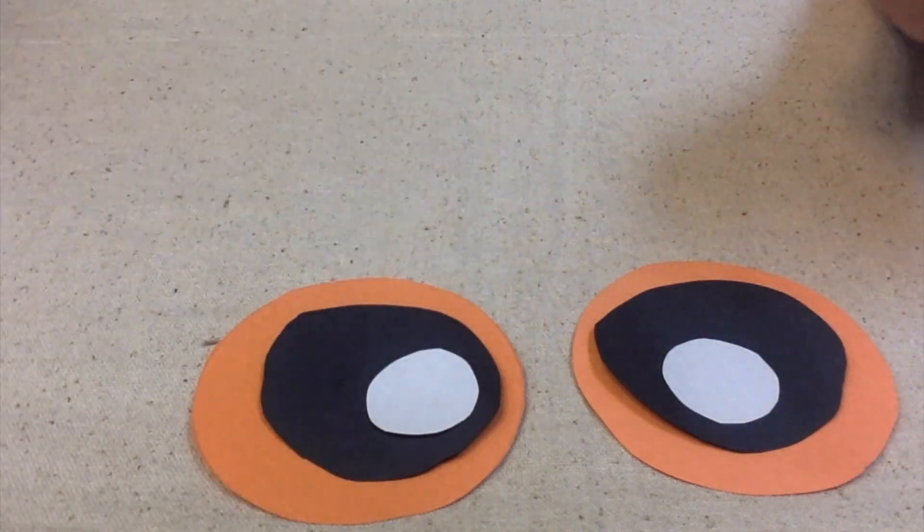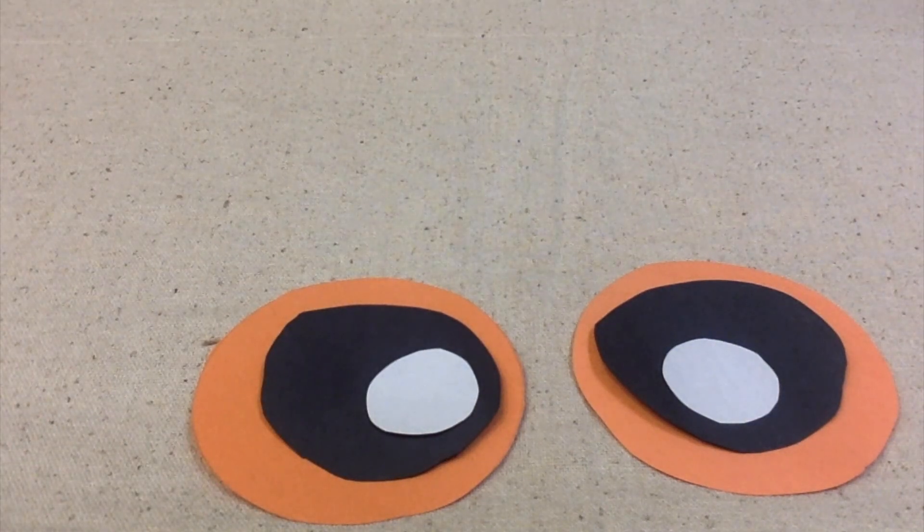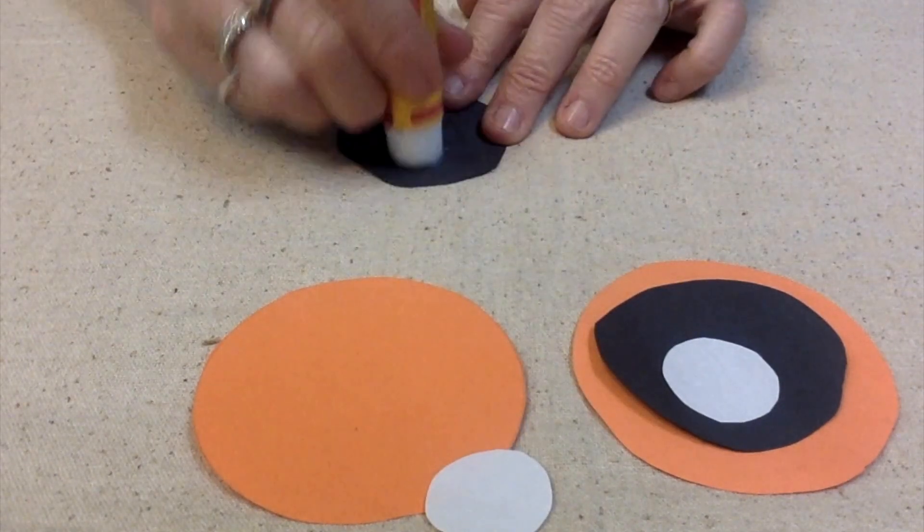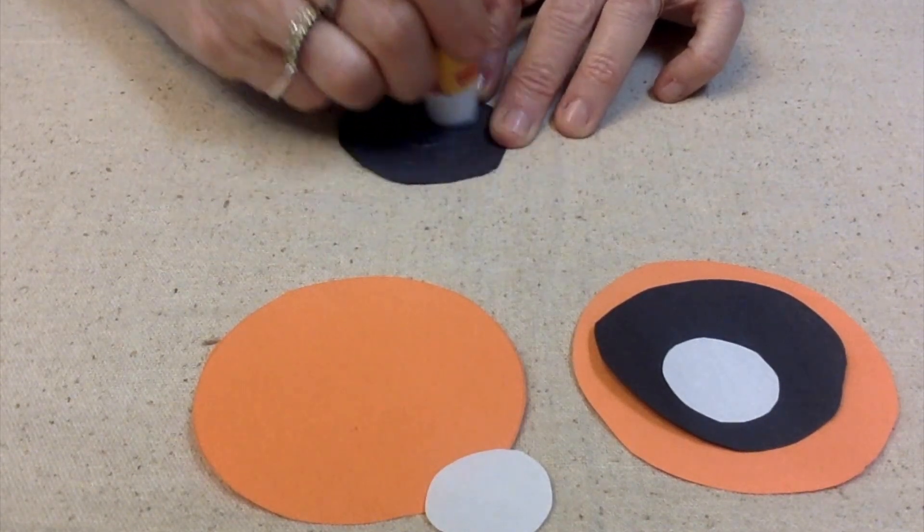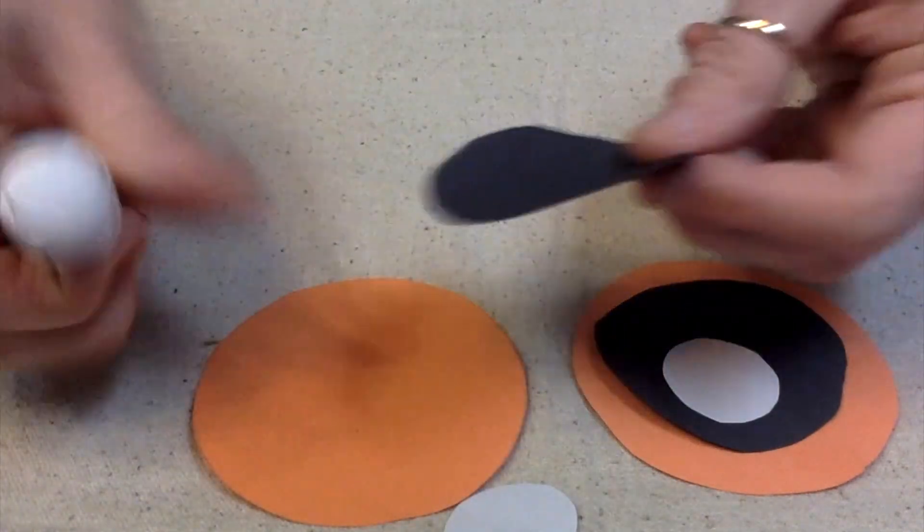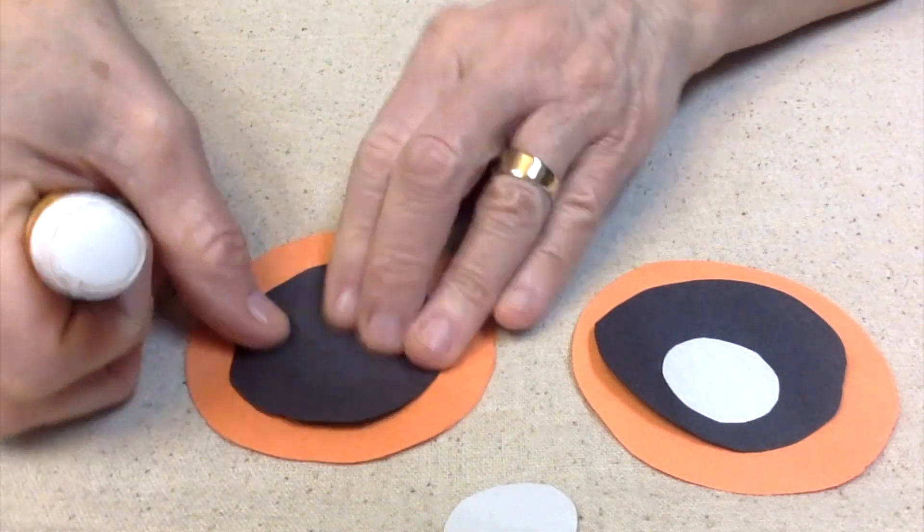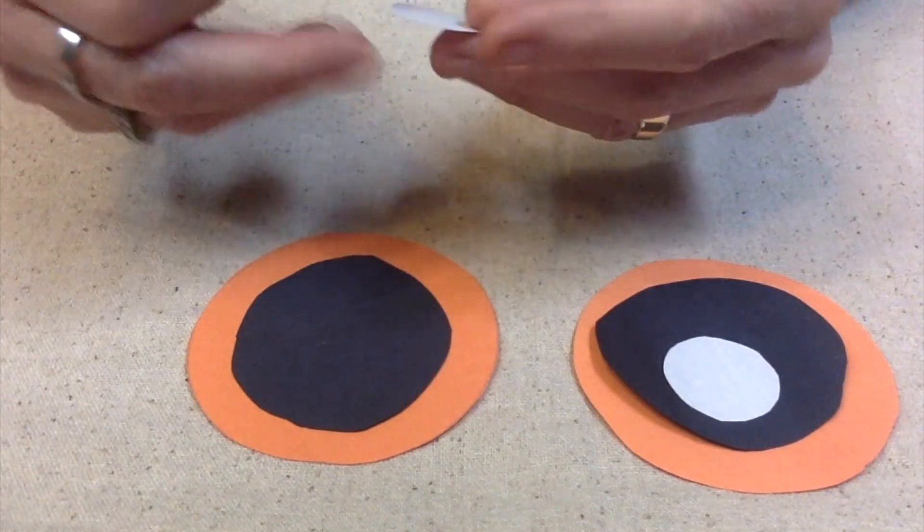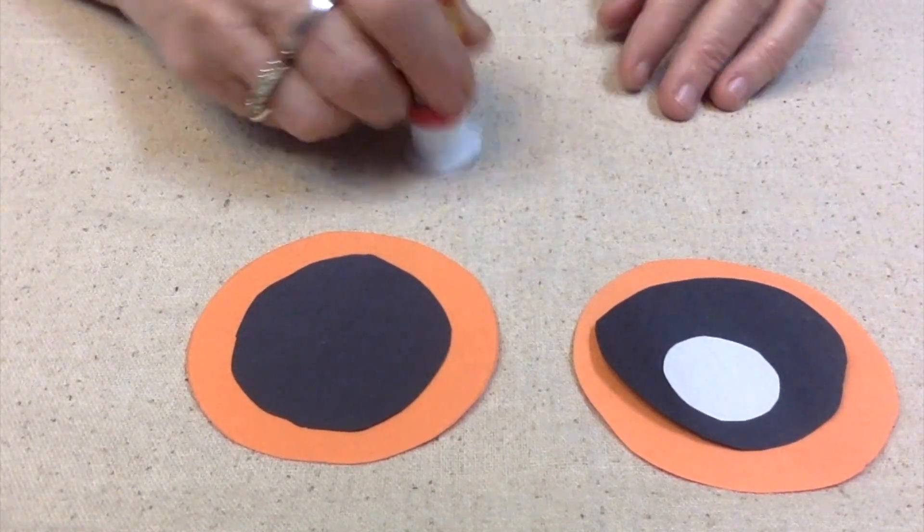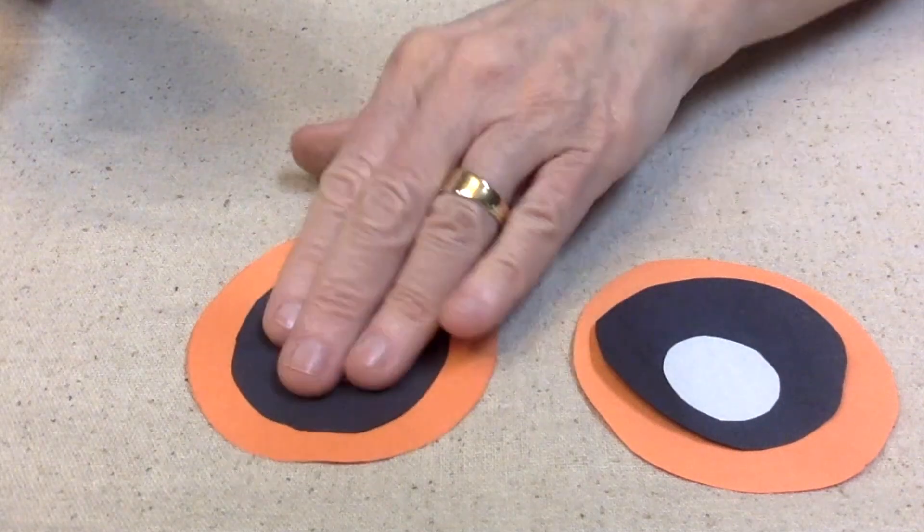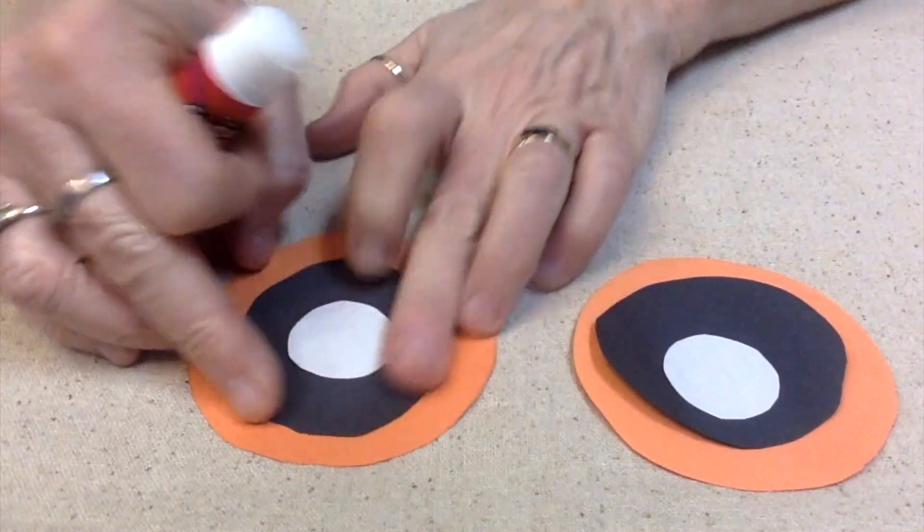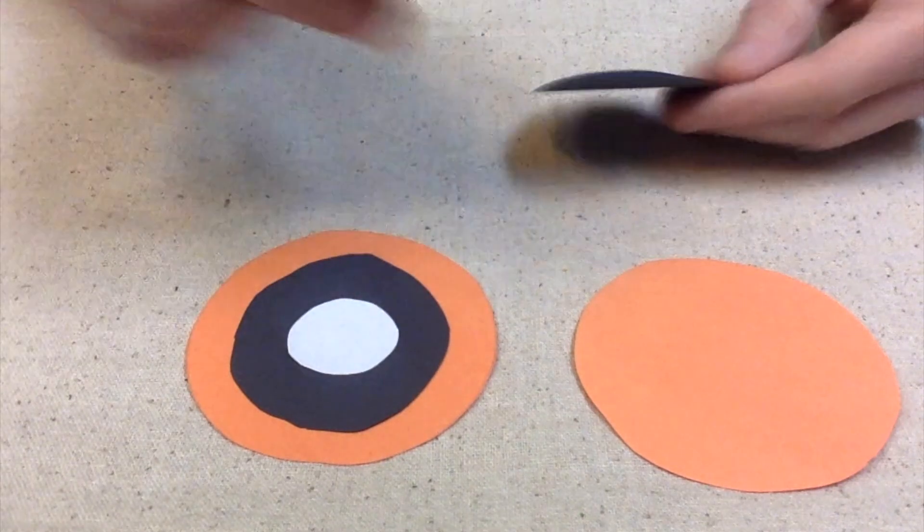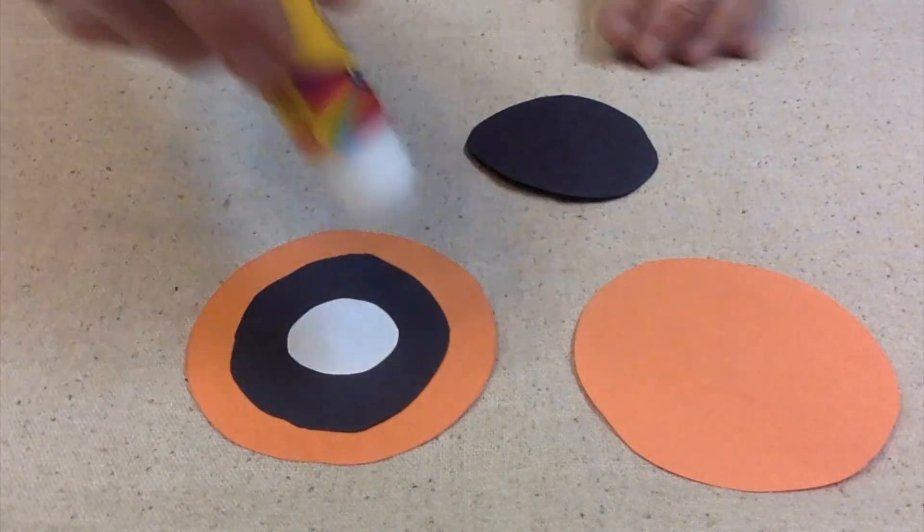And if you wanted to, you can kind of make them like this or however you want. I think I'm going to do mine all different - some of them will be cross-eyed, some of them will be like this.